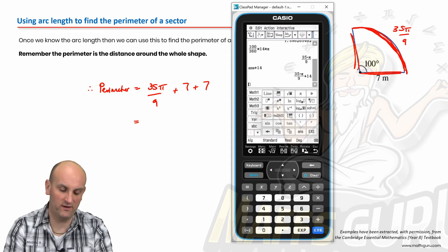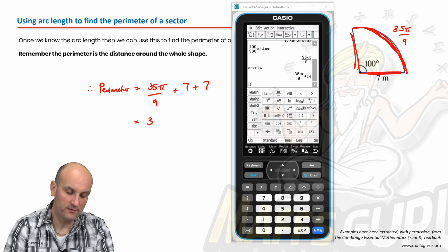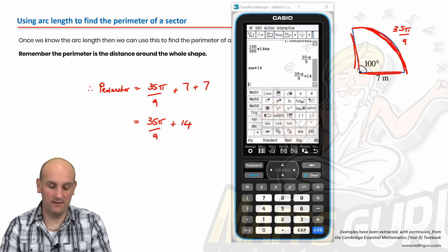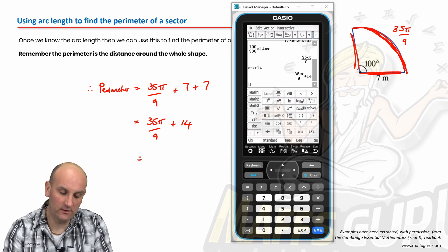And you're going to notice the calculator there says, 35 pi on 9 plus 14. Believe it or not, that is an exact value. Not particularly nice and helpful, is it?